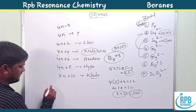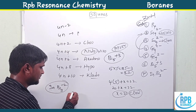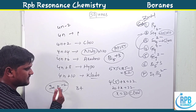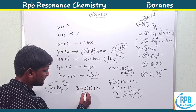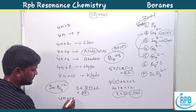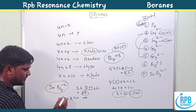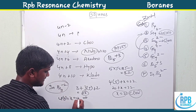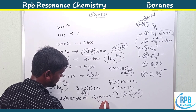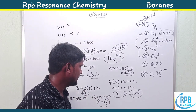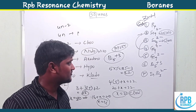For InBi3²⁻: indium is group 3 (3 valence electrons), bismuth is group 5 (5 valence electrons). Total = 3 + (3×5) + 2 = 3 + 15 + 2 = 20 electrons. Total atoms = 4, so 4(4) + x = 20 → 16 + x = 20 → x = 4. This gives 4n+4 — nido type structure. This is a common CSIR NET question.